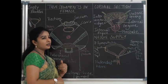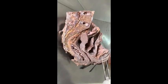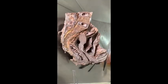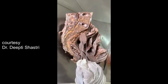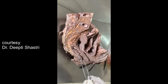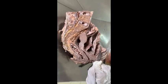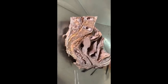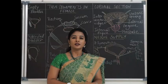In this female pelvis specimen, the pubic symphysis is anterior and the sacrum is posterior. Within the pelvic cavity, the urinary bladder is found anteriorly, the uterus in the middle, and the rectum and anal canal posteriorly. Between the pubic symphysis and urinary bladder is the retropubic space of Retzius, and between the urinary bladder and uterus is the vesicouterine pouch of peritoneum.